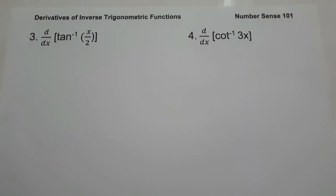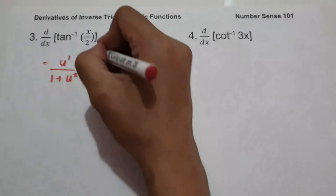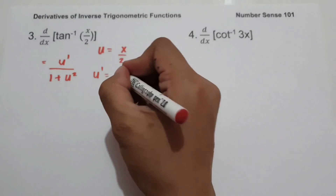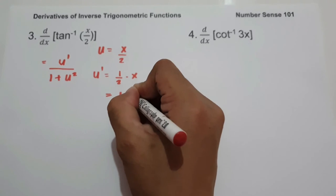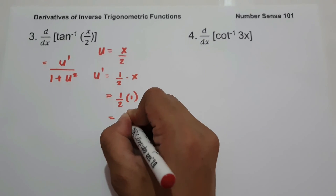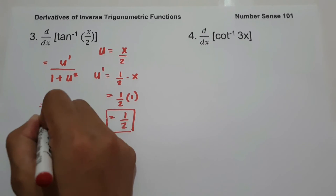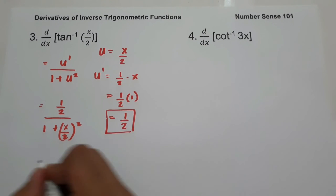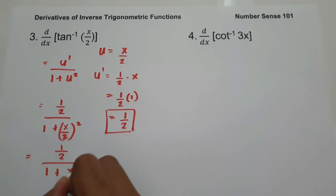On number 3, what is the derivative of arctan x over 2? The derivative of arctan u is u prime over 1 plus u squared. So let us have the value of u, that is x over 2, and u prime — the derivative of x over 2. Since x over 2 can be written as one-half times x, the derivative is one-half. So u prime is one-half, and then 1 plus u, that is x over 2, squared. To simplify, we write one-half and then 1 plus x over 2 squared, that is x squared over 4.